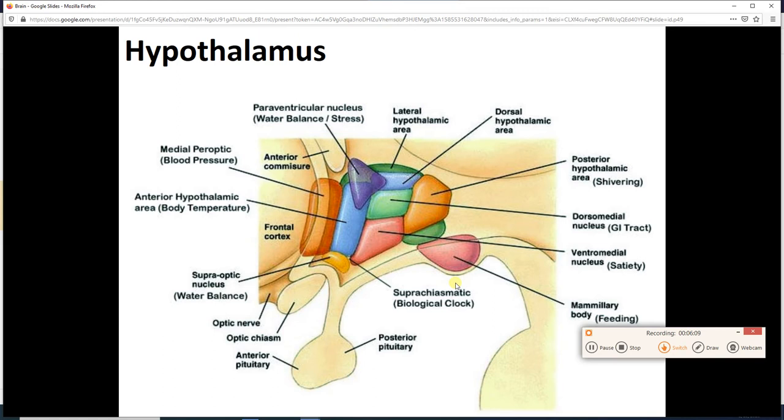Hypothalamus time. Hypothalamus is underneath the thalamus. In this picture, the thalamus is up here. This is the hypothalamus right here. Here's the pituitary gland, infundibulum. And these are all different chunks of hypothalamus. I don't want you to learn the names of all these different locations, but I want you to notice some of the jobs that are listed.